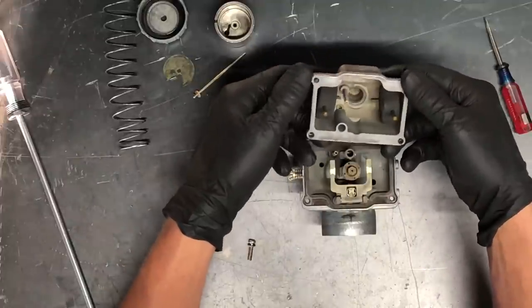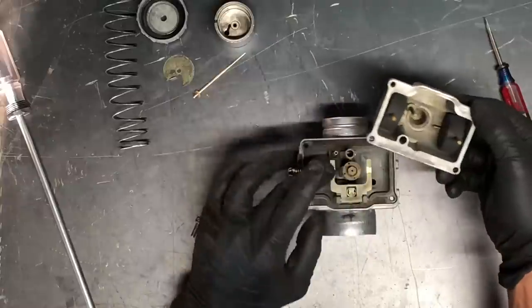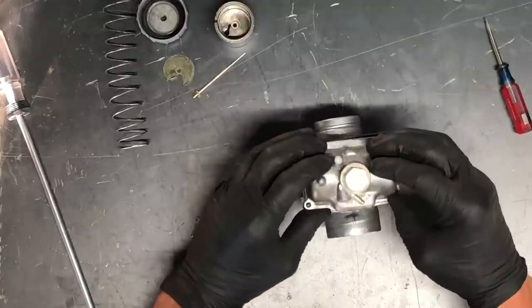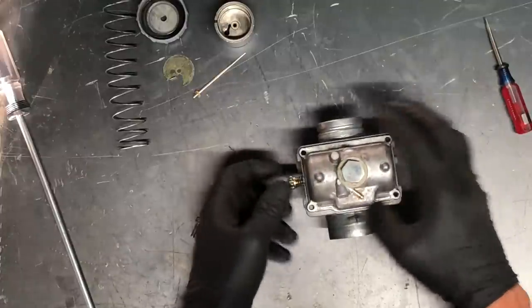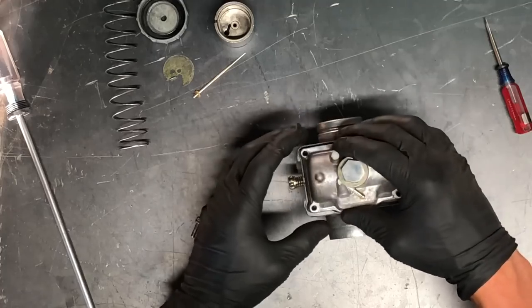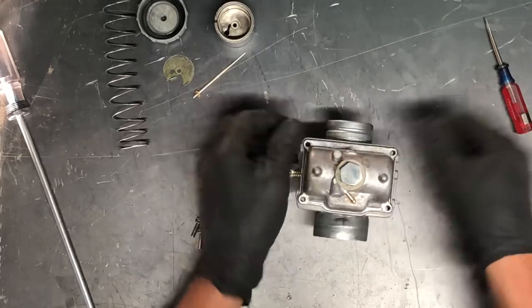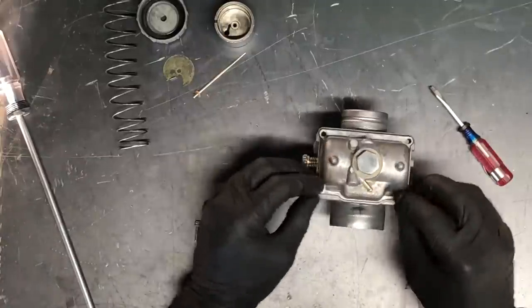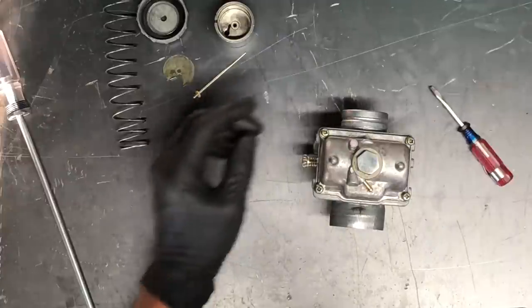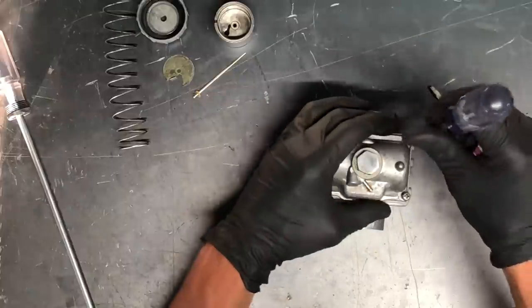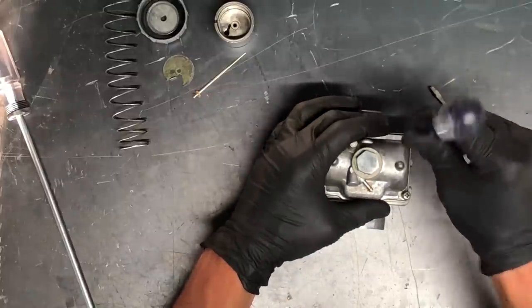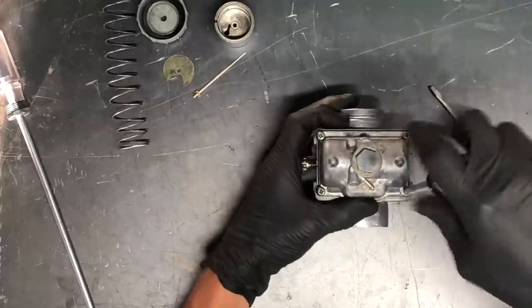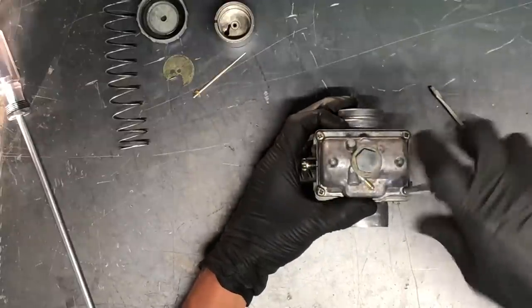Go ahead and put the pilot jet back in there, snug it up, and we are ready to put this bowl back on. Make sure that there's no excessive grooving here. Make sure these tabs are where they need to be so that your floats are allowing enough fuel to come in there. Make sure that's seated properly, make sure that gasket is good, no breaks in there, no major wear. A lot of times, well every time when you buy a gasket kit, a carb rebuild kit, that gasket will come with it. So go ahead and tighten these screws back up.